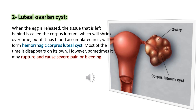Luteal ovarian cysts: when the egg is released, the tissue left behind is called the corpus luteum, which shrinks over time. However, if blood accumulates in it, it forms hemorrhagic corpus luteal cysts. Most of the time these disappear on their own, but sometimes they may rupture and cause severe pain or bleeding.